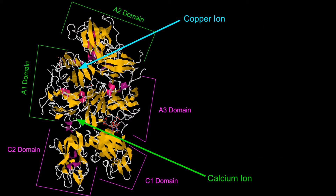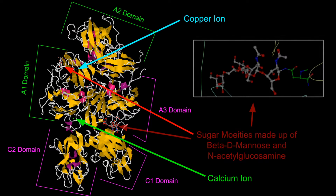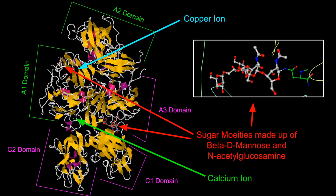Factor VIII also contains the sugar moieties beta-D-mannose and N-acetylglucosamine between domains A1 and A2, and between A3 and C1, which help in packing and stabilization of the protein.